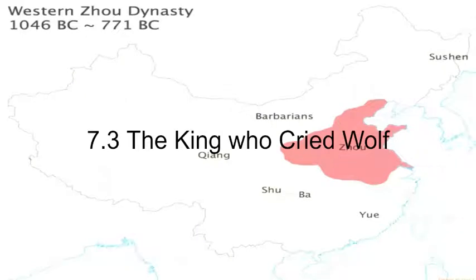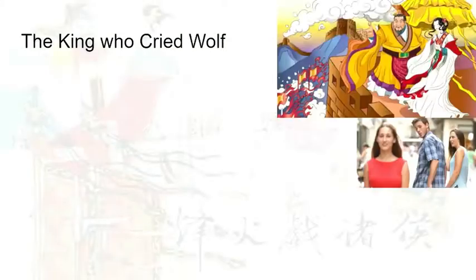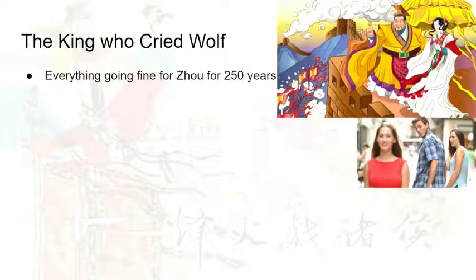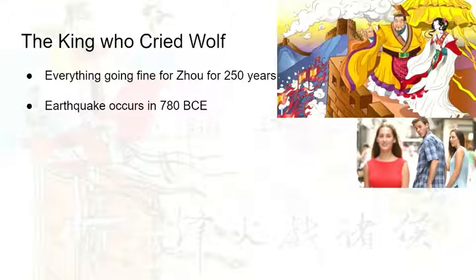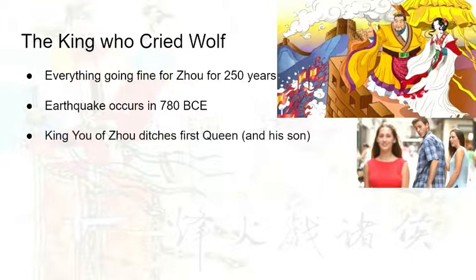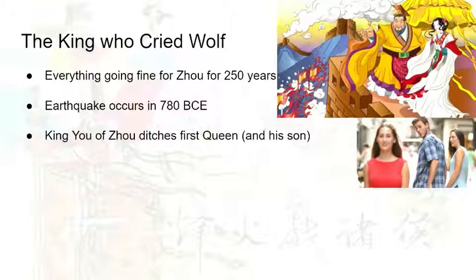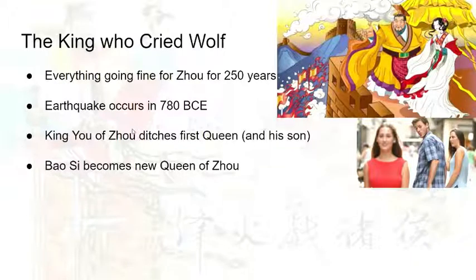Moving on to 7.3: the king who cried wolf. Everything was going fine for the Zhou for about 250 years. There was an earthquake in 780 BCE, but a competent dynasty could work through that. Then King Yuzhou decides to ditch his first queen — and he also had a son with that queen, so he ditched him as well — because he became infatuated with a person named Bao Si, a very attractive individual. He makes her his concubine, and eventually she becomes the new queen of Zhou.